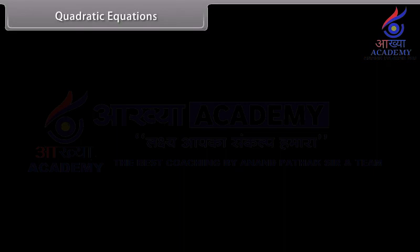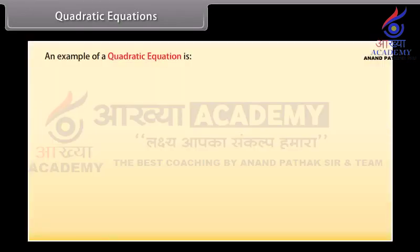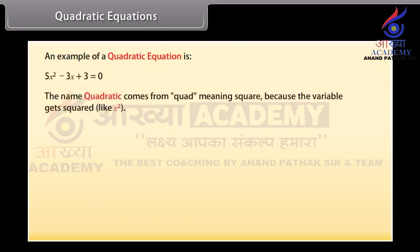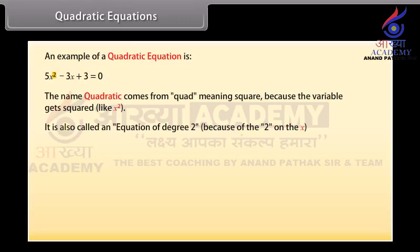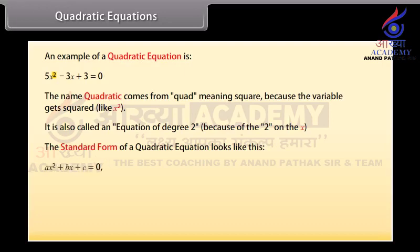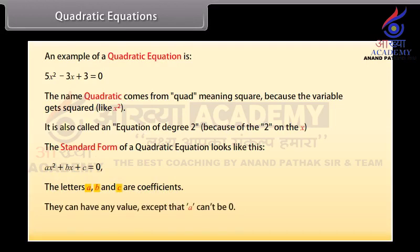Quadratic equations. An example of a quadratic equation is shown here. The name quadratic comes from 'quad' meaning square, because the variable gets squared — like x squared. It is also called an equation of degree 2 because of the 2 on the x. The standard form of a quadratic equation is: ax squared plus bx plus c is equal to zero. The letters a, b, and c are coefficients — they can have any value except that a cannot be zero. The letter x is the variable or unknown.